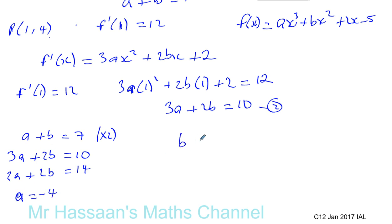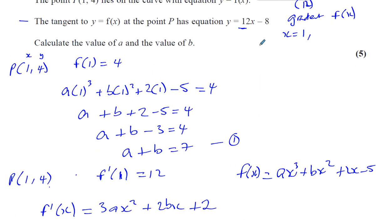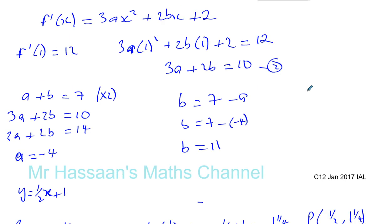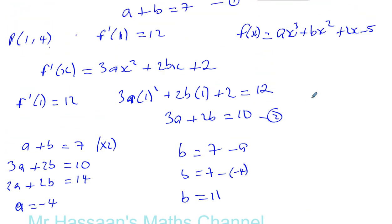And b is therefore going to be 7 minus a. So b is going to be 7, take away -4, which is 11. So the question told us to calculate the value of a and b. So a is equal to -4 and b is equal to 11. And there we have the answer to our question. I hope that was clear. Thank you for watching.